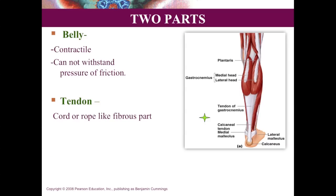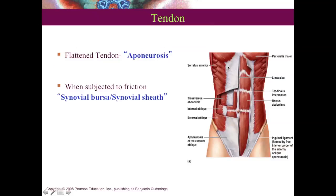A muscle also has a belly and a tendon. The belly is the contractile, fleshy part that cannot withstand pressure or friction. The tendon is a cord-like, tough fibrous structure that can withstand friction. It is said that tendons are so tough that during sudden contraction the bone might break but the tendon will not tear. The strongest tendon in the body is the tendo calcaneus. Some tendons are flattened, and those flattened tendons are called aponeuroses.